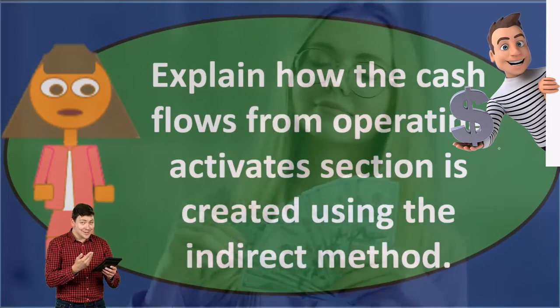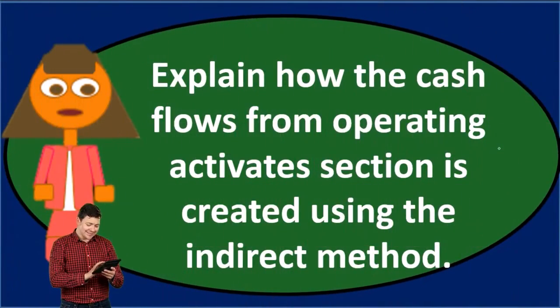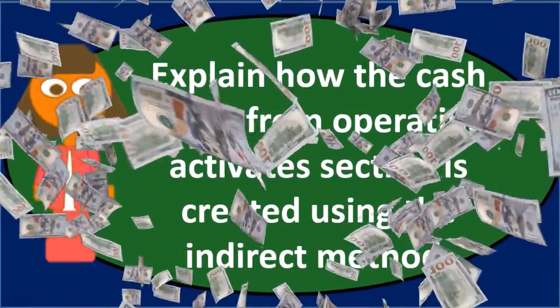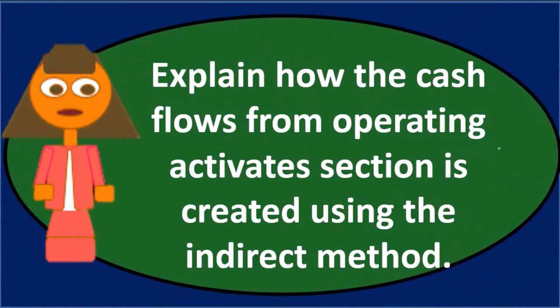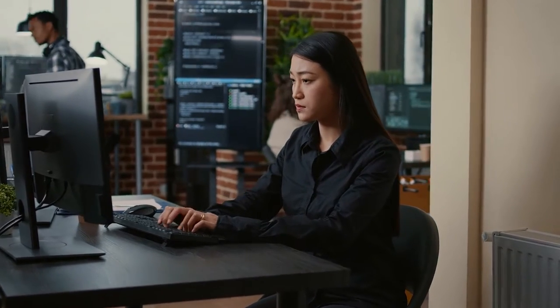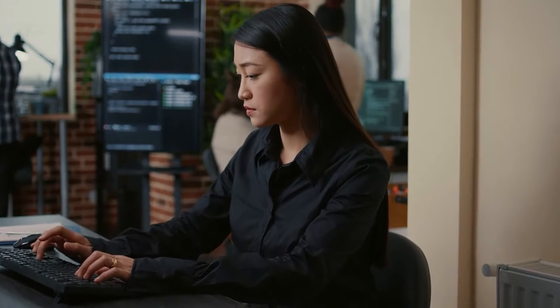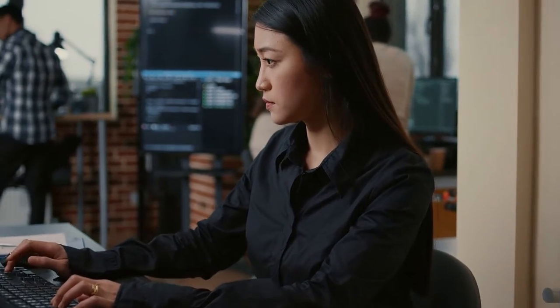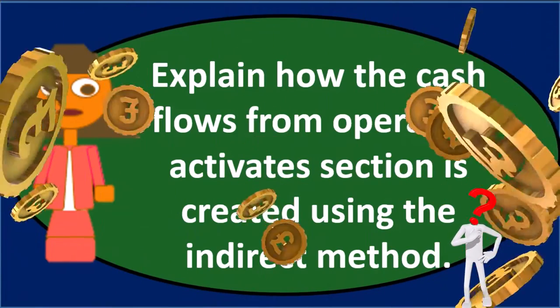That's one reason the indirect method is often required even if we use the direct method — we still have to do this reconciliation. So the approach is: start with net income and reverse out everything that's an accrual item to get to cash flows from operations. We do that by looking at the change in all balance sheet accounts — typically the change in current assets and current liabilities.